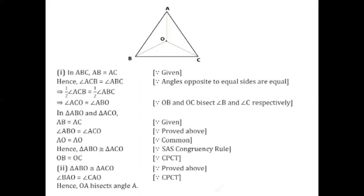Now, what is the second part? We are asked to prove that OA bisects angle A. We have already proved that triangle ABO is congruent to triangle ACO. Hence, I can easily state that angle BAO of triangle ABO is equal to angle CAO of triangle ACO by CPCT. That means angle A of triangle ABO is equal to angle A of triangle ACO. If they are equal, it clearly suggests that OA bisects angle A. With this, we come to the end of the solution to question number 1.